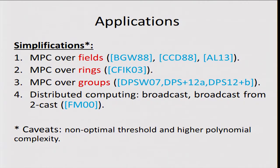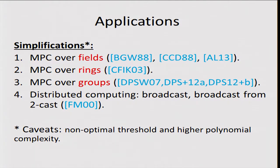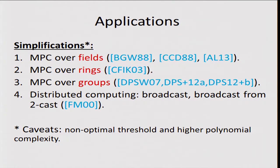Before I tell you how we do that, let me mention some applications. We get simplifications of known protocols — for example, in the standard setting of BGW, where you're trying to do a computation over a field, we obtain very simple and natural protocols. We also obtain MPC protocols over other algebraic structures like rings and groups, and some results in distributed computing for broadcast. Two caveats: the threshold we get is only close to optimal, and all our protocols are polynomial time but the actual polynomial may be slightly larger than the original works.